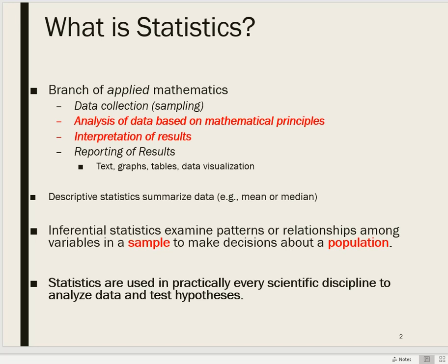Statistics has become a really important part of science in the last 100 years or so, because it's basically a tool that scientists use to answer questions about their data. Psychologists who are researchers will be very likely to use statistics on a regular basis. Psychologists who are applied psychologists, like clinical psychologists or organizational psychologists, need to have enough understanding of statistics in order to have an effective evidence-based practice. It's hard to evaluate evidence if you're not able to have at least a basic understanding of statistics.